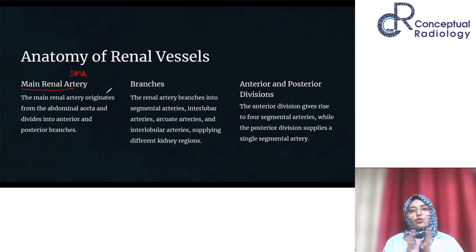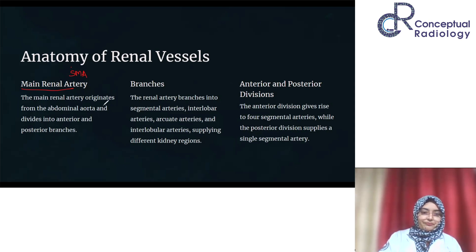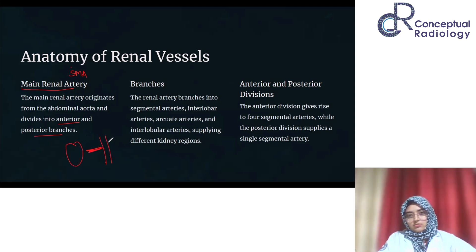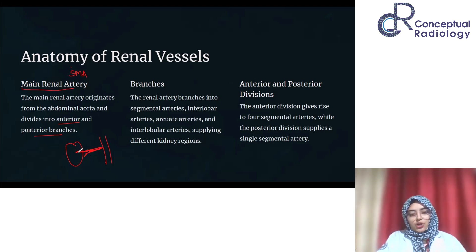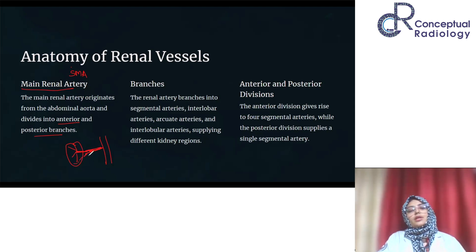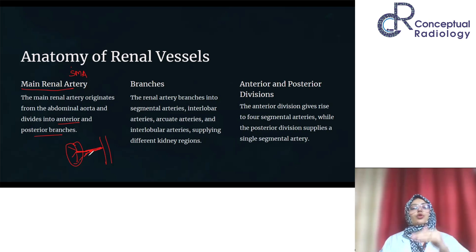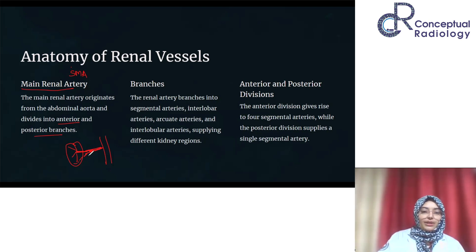You can rely on the SMA as a permanent landmark - just beneath the SMA comes the right, then the left renal artery. These are lateral branches of the abdominal aorta. There is usually a single main renal artery, but often before entering the hilum it starts giving off segmental divisions - an anterior division and a posterior division. The anterior division gives four segmental arteries: the apical, superior, anterior, and inferior. The posterior division gives a single posterior segmental artery.